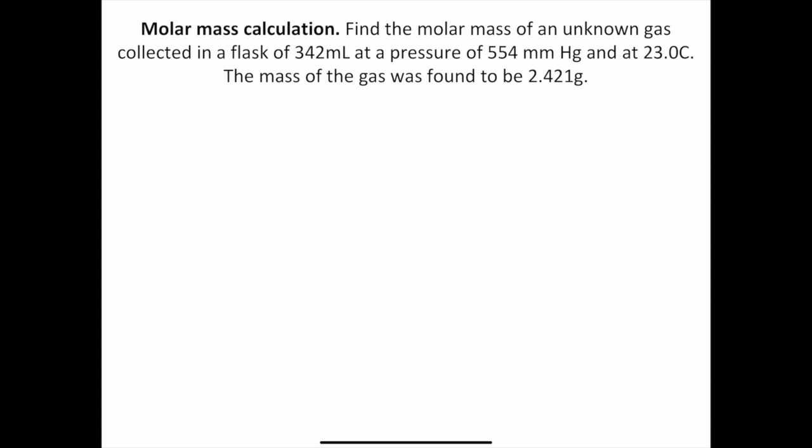So it says, find the molar mass of an unknown gas collected in a flask of 342 milliliters at a pressure of 554 millimeters of mercury and a temperature of 23 degrees Celsius. The mass of the gas was found to be 2.421 grams.